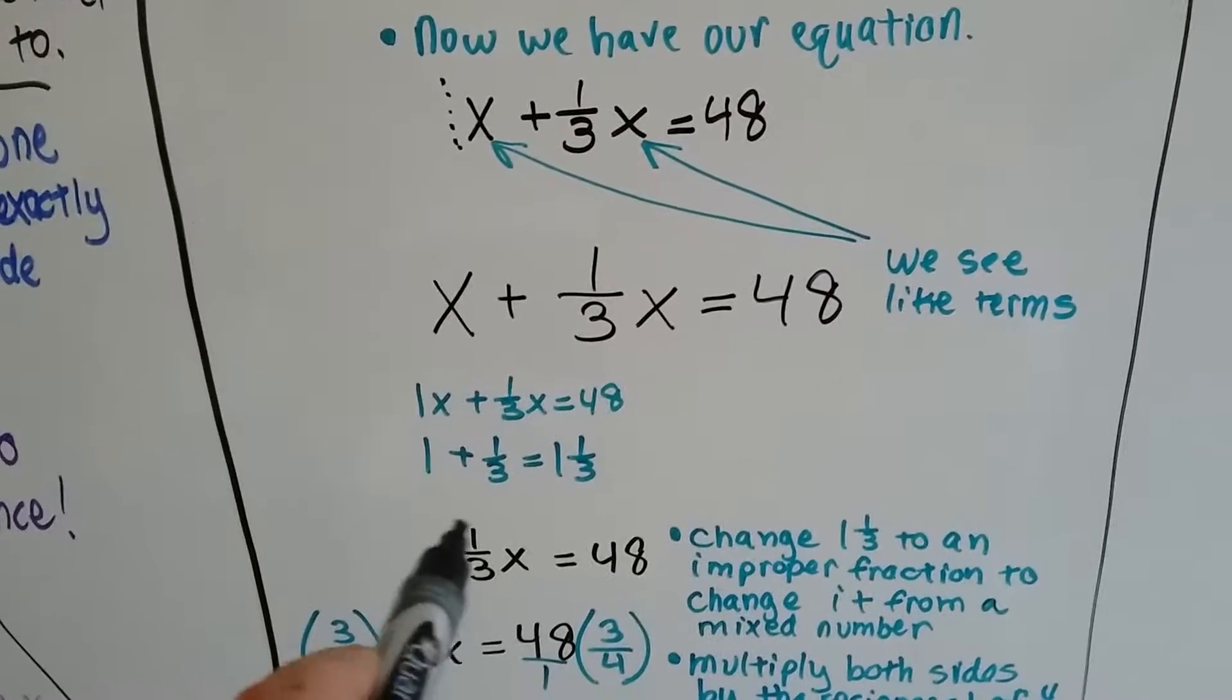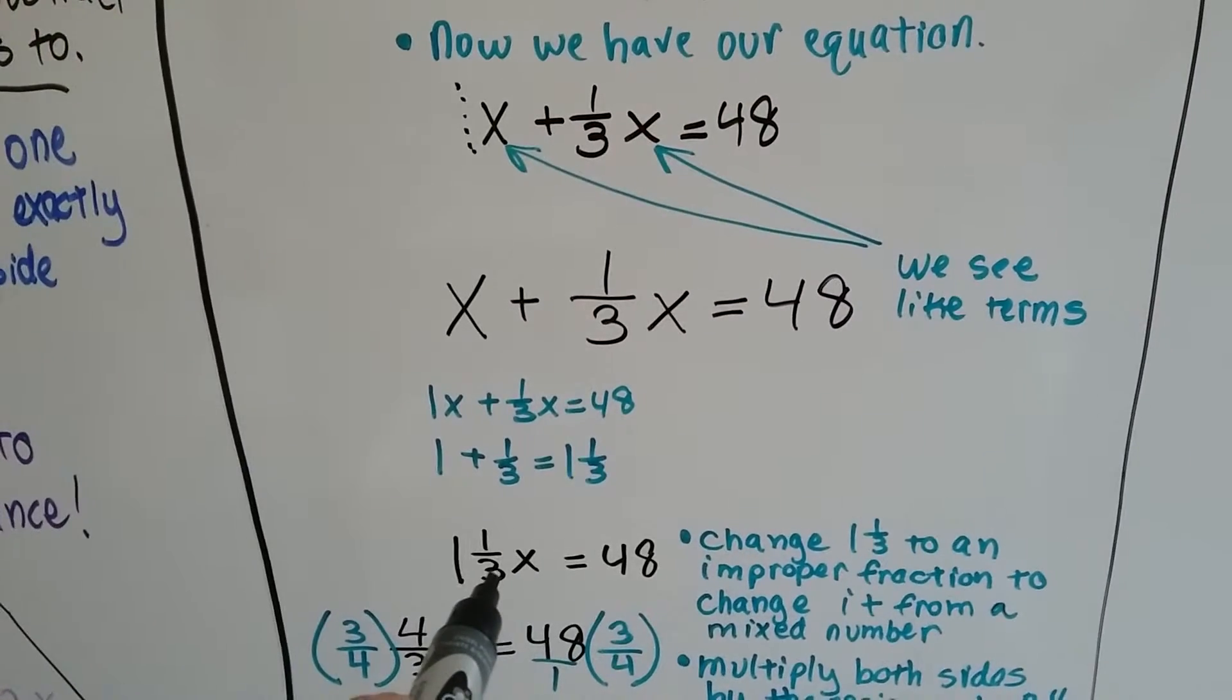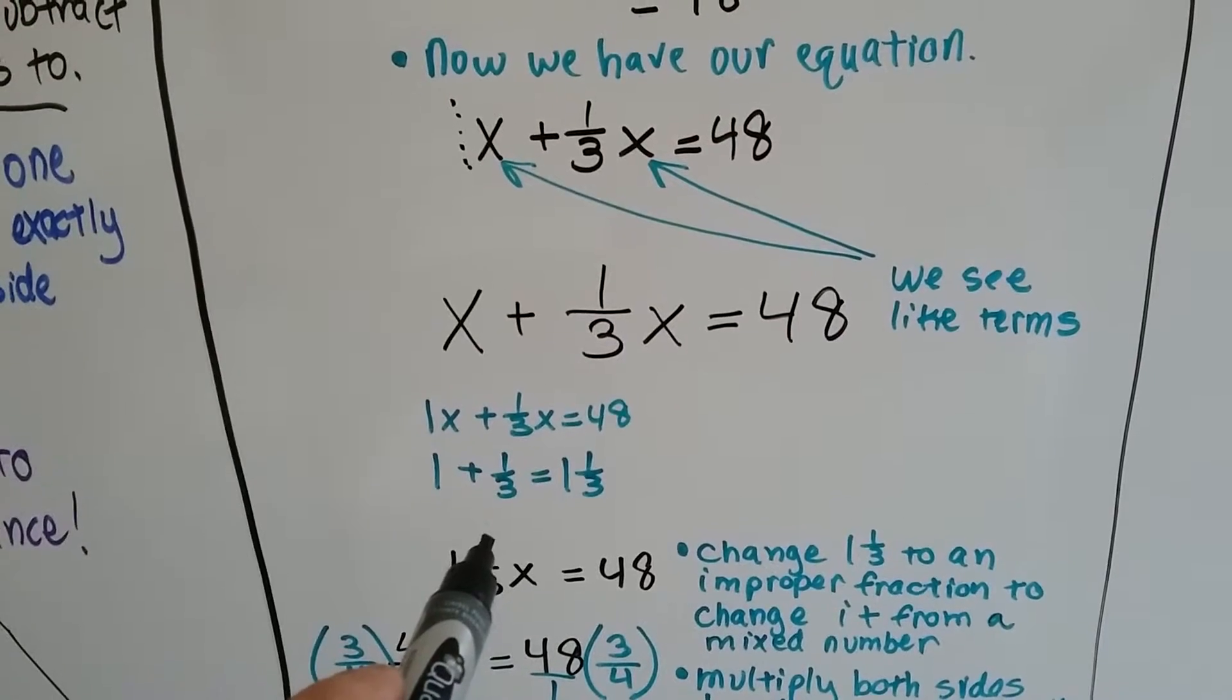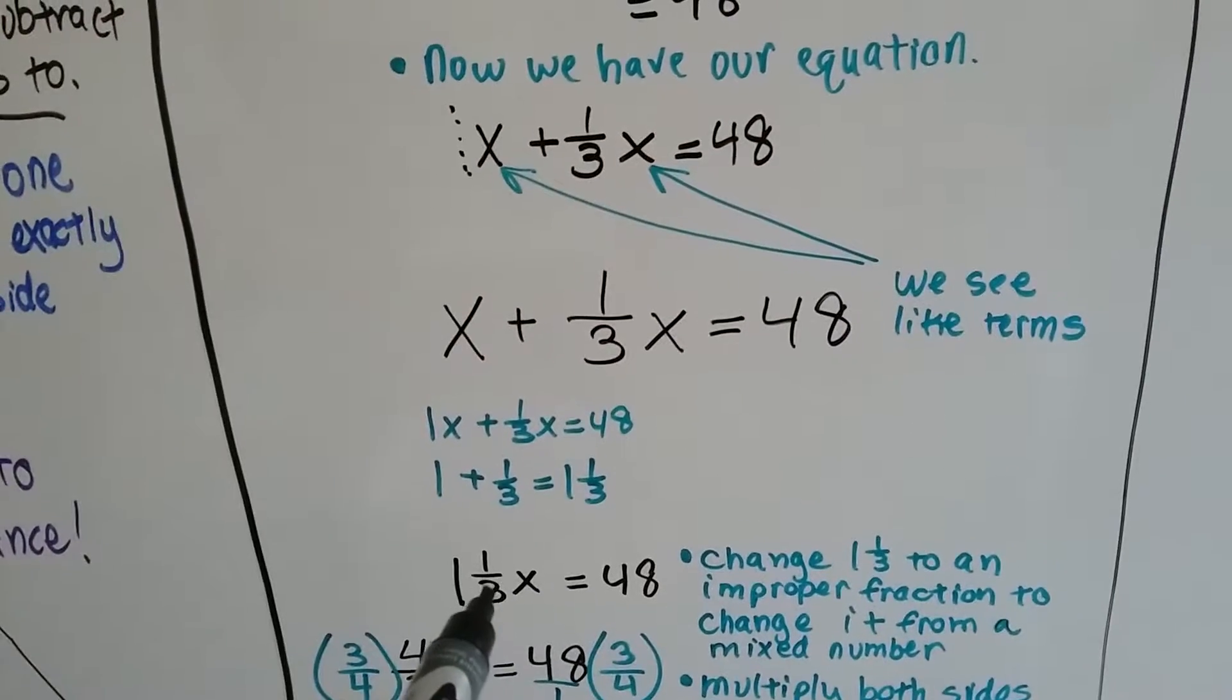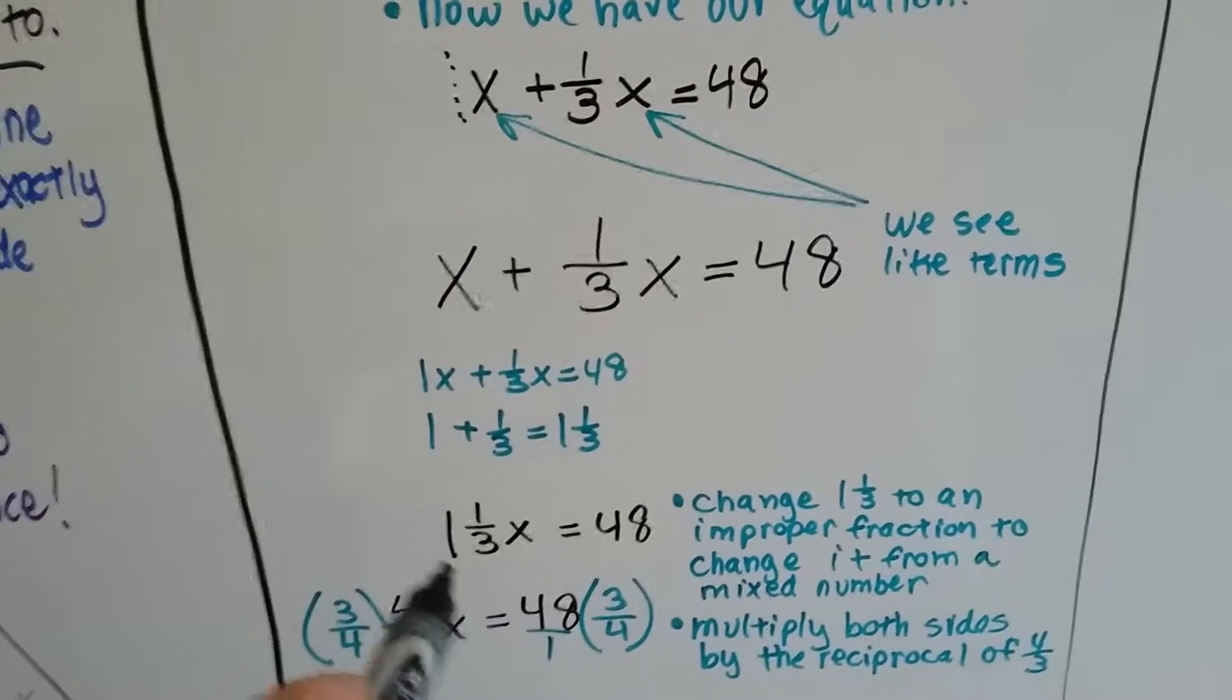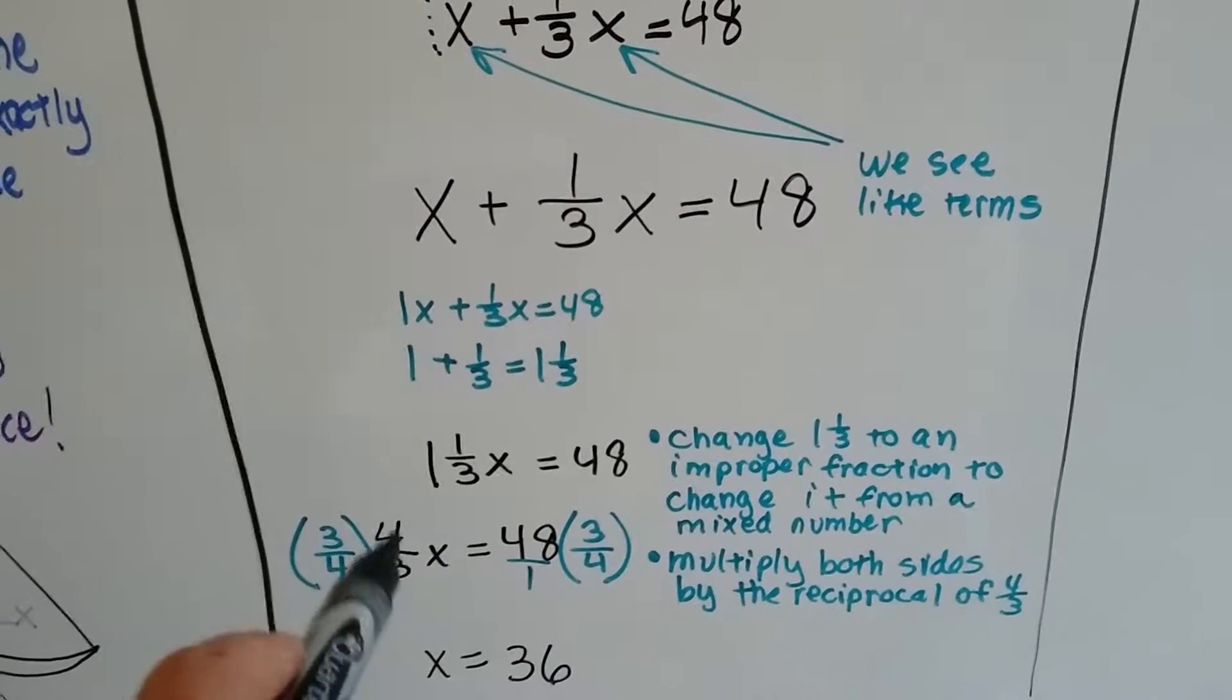Now we need to change that one and one-third to an improper fraction. We need to get rid of this mixed number. We multiply the whole number by the denominator: one times three is three. Then we add the numerator, that's four now. We put it over the original denominator. So now we have four-thirds. We turned it into an improper fraction.